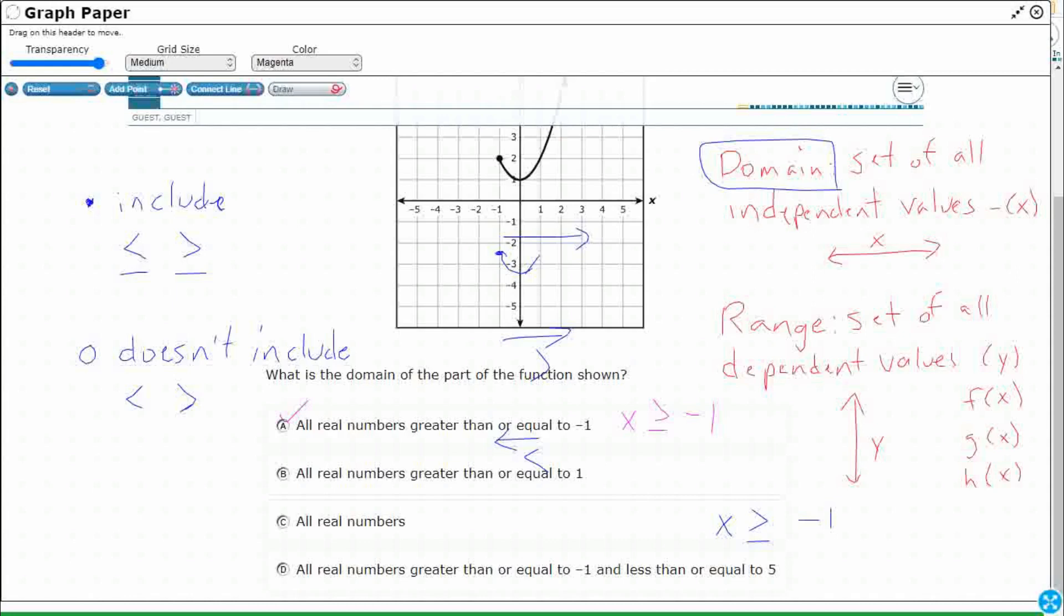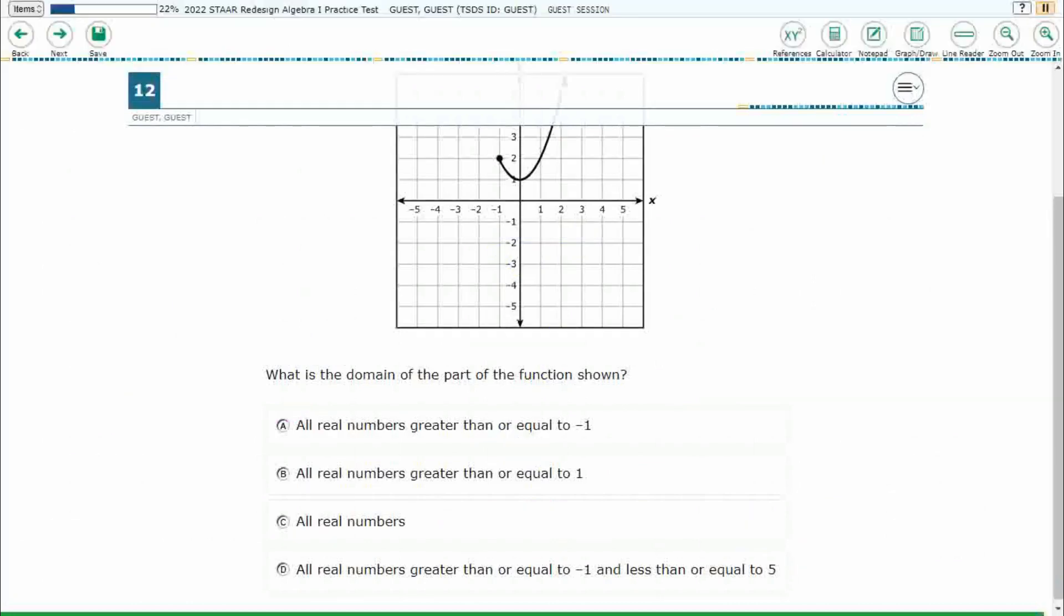Let's check, make sure B, C, and D are wrong. All real numbers greater than or equal to one. So this is greater than or equal to positive one. Nope. That's not what we're looking for. This is all real numbers. So this is going to be, looks like this, the infinities. So our answer is going to be A.